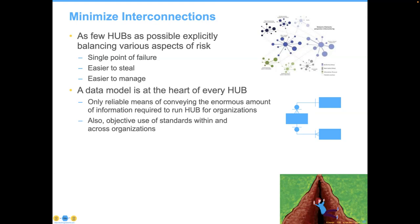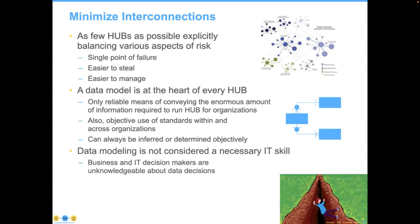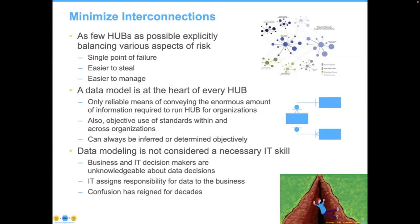Data models are the only reliable means of communicating the enormous amount of information that hubs require to run organizations. They represent an objective use of standards within and across organizations. They can always be inferred even if documentation has disappeared, by doing what is called reverse engineering. However, data modeling is not considered a necessary IT skill. Business and IT decision makers are generally not knowledgeable about these topics, and business and IT are generally pointing their fingers at each other saying 'you're responsible for the data.' This confusion has reigned for decades, accumulating an enormous amount of data debt.